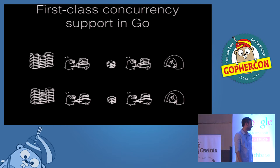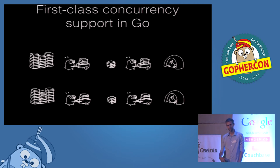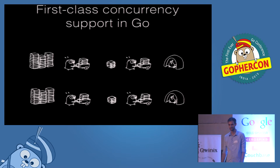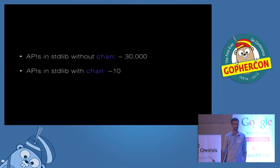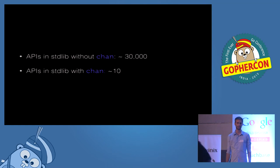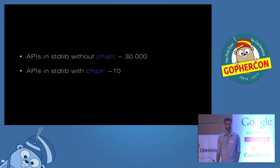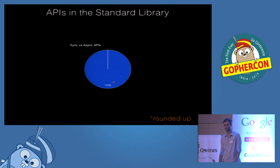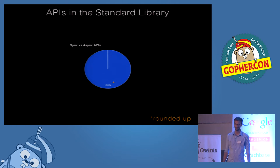So given that, if you take a look at the standard library, it surprised me when I looked at how many APIs use channels — it was only 10. And there are about 30,000 APIs, roughly public functions in the standard library. For a visual representation, that's about how many async APIs there are in the standard library — and that 100% is rounded up.